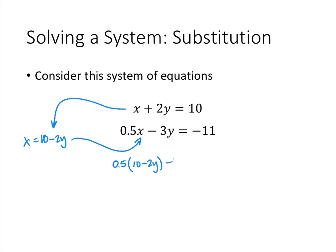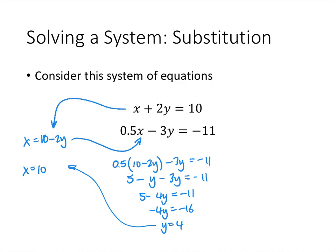That gives us 0.5 times (10 minus 2y) minus 3y equals negative 11. We distribute and get 5 minus y minus 3y, so 5 minus 4y equals negative 11. Subtracting 5 from both sides gives y equals 4. Then we plug y equals 4 back into our equation for x: x equals 10 minus 2 times 4, that's 10 minus 8, which is 2. So our solution is (2, 4).